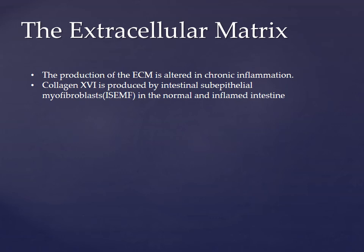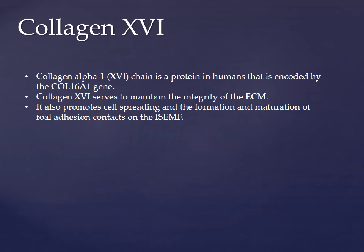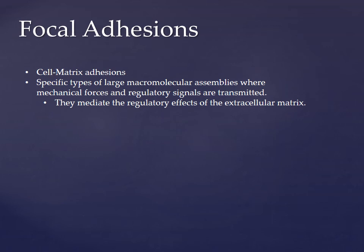Collagen-16, or the collagen alpha-1 chain, is a protein in humans encoded by the COL16A1 gene. Collagen-16 serves to maintain the integrity of the ECM, providing structure and support. It also promotes cell spreading and the formation and maturation of focal adhesions on the ISEMF. Focal adhesions — sometimes referred to as cell matrix adhesions — are large macromolecular assemblies where mechanical forces and regulatory signals are transmitted. They mediate the regulatory effects of the extracellular matrix.